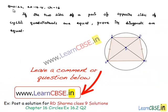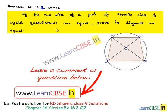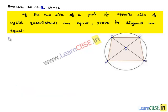Let us discuss question number 22 from exercise 16.5, chapter 16. If the two sides of a pair of opposite sides of a cyclic quadrilateral are equal, prove that its diagonals are equal. Now moving on to the solution.